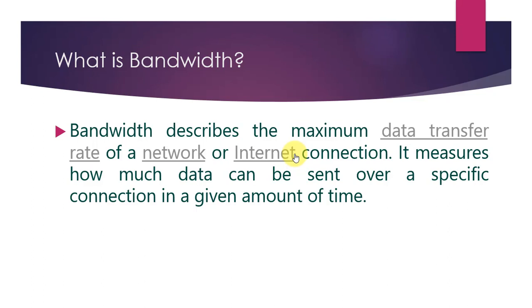One more thing to notice: you get a maximum speed equal to the lowest bandwidth of the connected communication media. Data often flows over multiple network connections, which means the connection with the smallest bandwidth acts as a bottleneck. So the best bandwidth you will get is the smallest bandwidth of your network connections.